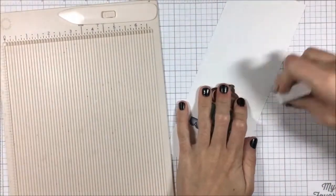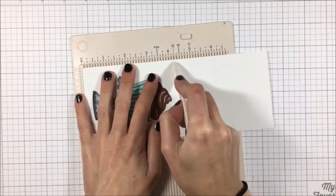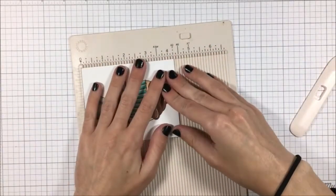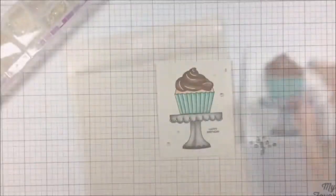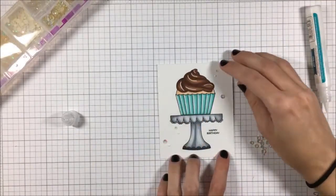Next I'm going to score and fold my card but before I do that I just take an eraser and erase that little pencil line I made for myself to ensure that my cupcake was on the front of the card and didn't go over the top. I'm going to score along the four and a quarter mark and then come in with my bone folder. Last but not least I'm going to add some bling and that is the final card.